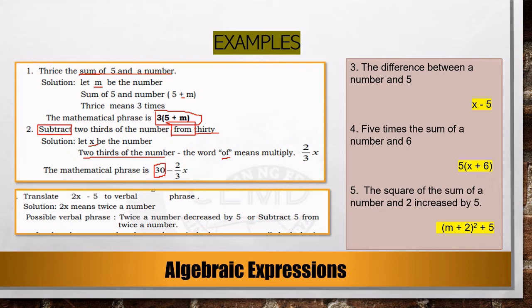Number three: 'the difference between a number and five.' Let us represent the number as x. 'Difference' means minus, so the mathematical phrase is x − 5. Number four: 'five times the sum of a number and six.' Representing the number as x, five times means multiplied by five, so the answer is 5(x + 6).